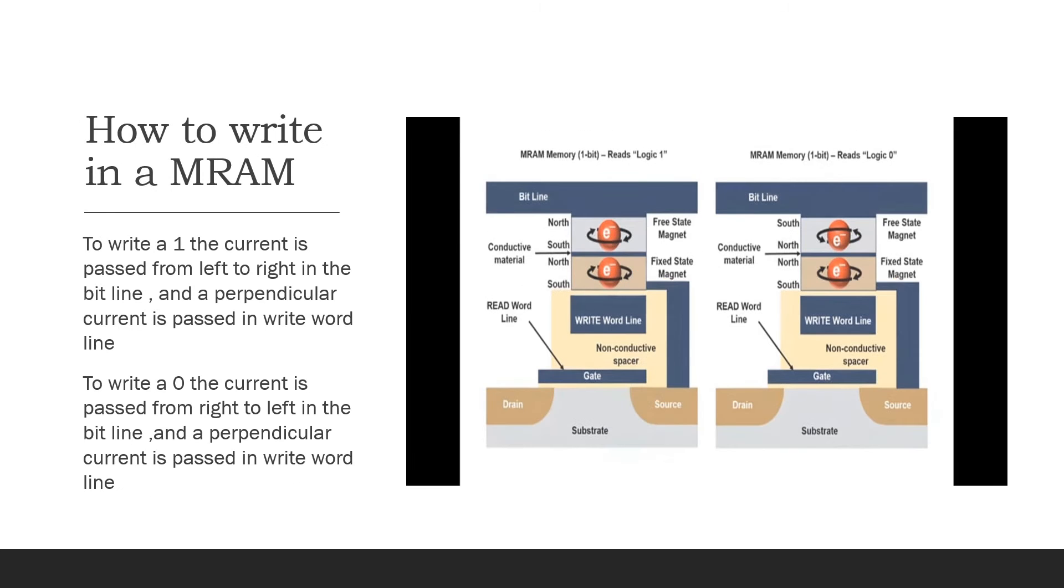In the write part, what happens is we know from the read path that this will read 0 only when this is of low resistance. For this to be lower resistance, this spin should be aligned with this spin. So the current should be from left to right so that the clockwise direction, the spin of the electron, is along the line of the current. When the current is from left to right, here it will be perpendicularly outward.